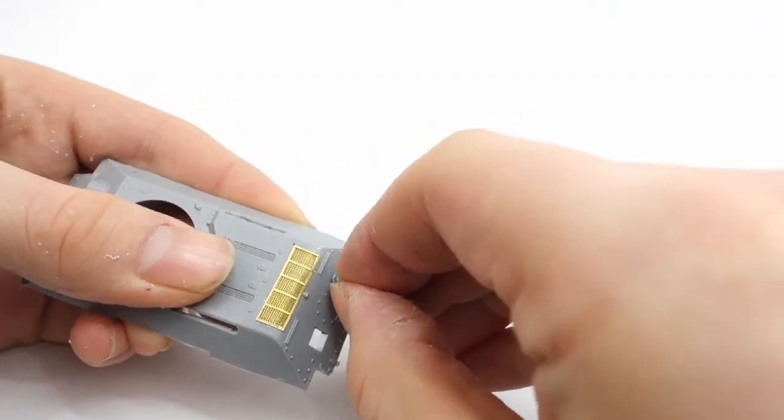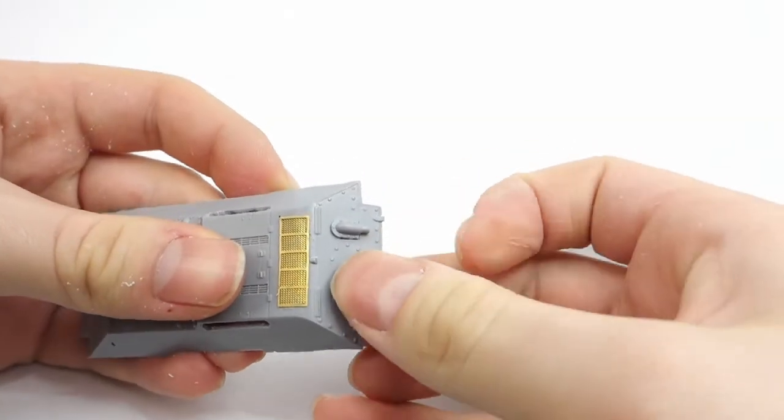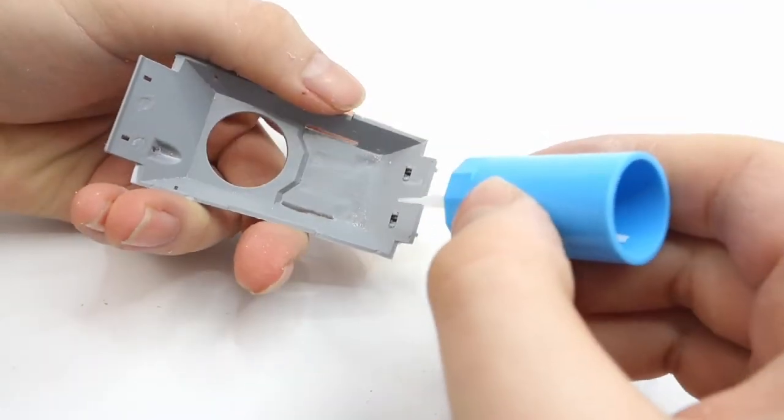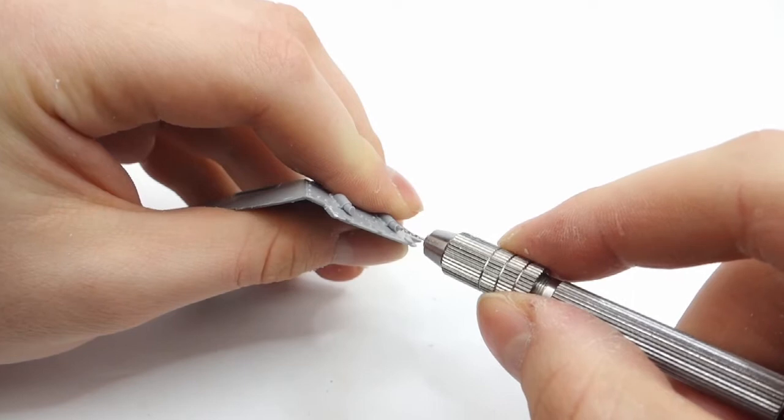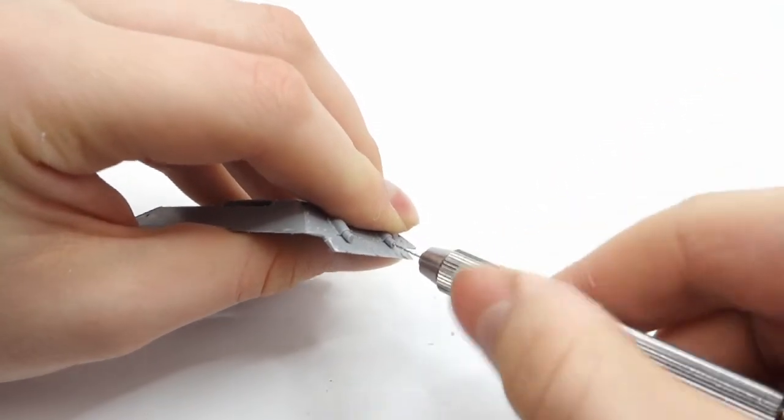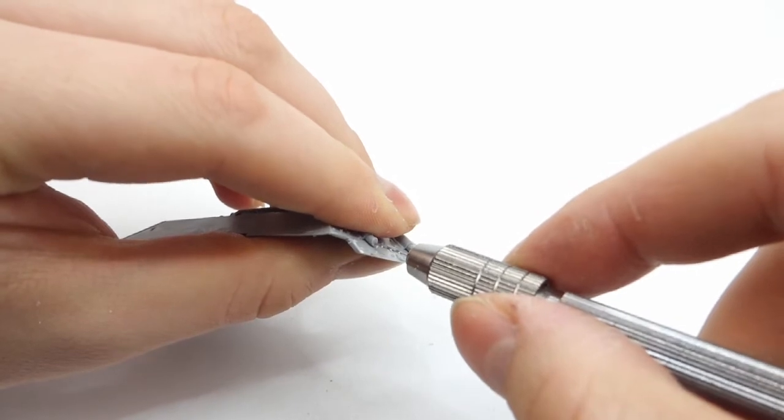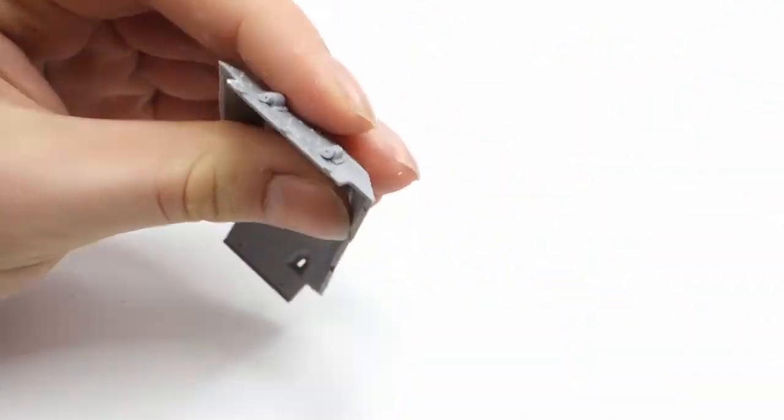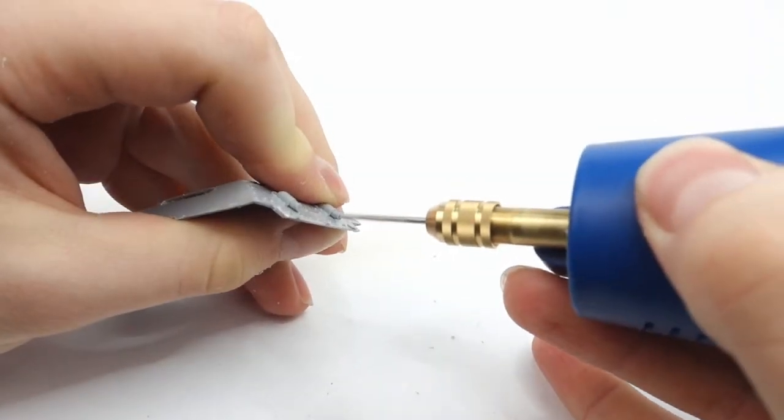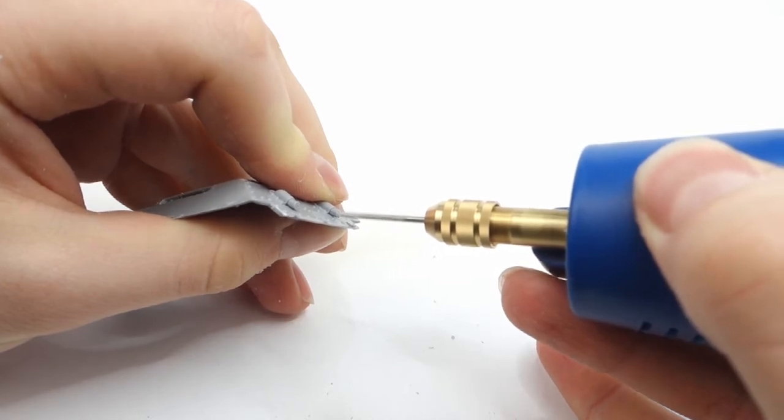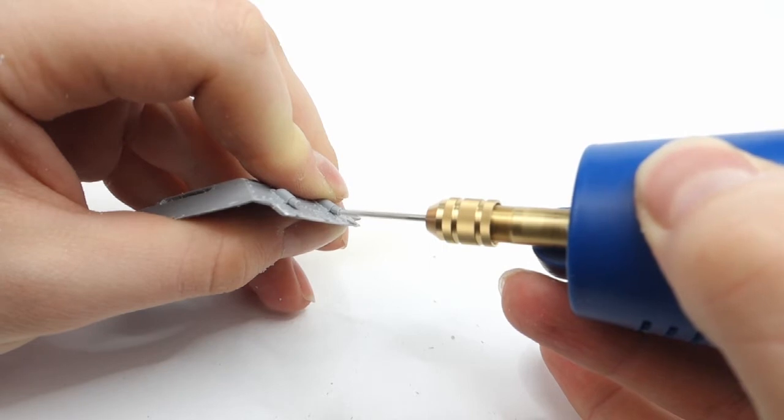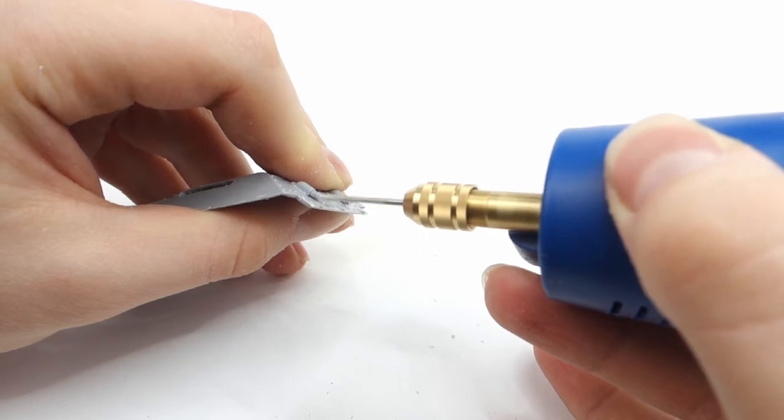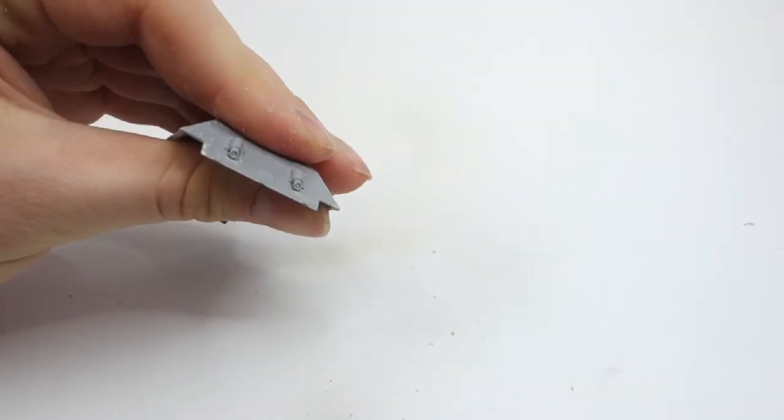One of the biggest downsides of the model are solid exhaust pipes which need to be drilled out. First I drill out holes using a very small drill bit inside a hand drill. And after that I make those bigger using a bigger drill bit inside an electric tool. The final result is pretty convincing in my opinion.